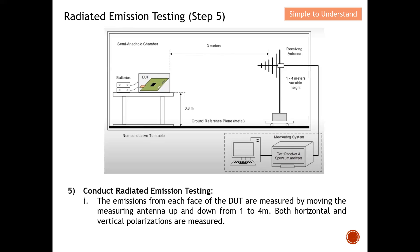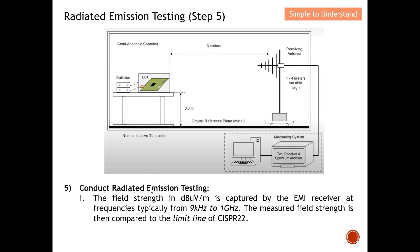Once all peak values are captured, those exceeding the limit line are identified for final testing. The field strength in dBµV/m is captured by the EMI receiver for final measurement. The spectrum analyzer is used for the initial peak search, while the EMI receiver is used for the final detailed test. Frequency range is typically 9 kHz to 1 GHz for the EMI receiver, and 1 GHz to 6 GHz is covered by the spectrum analyzer. The measured field strength is then compared to the limit line of CISPR 22.